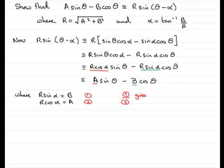Well, if I divide equation 1 by equation 2, can you see that the R's would cancel? And I would get sine alpha over cos alpha. And sine alpha divided by cos alpha is better known as tan alpha.